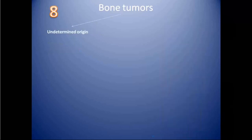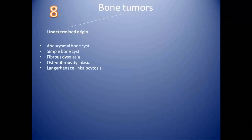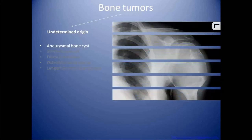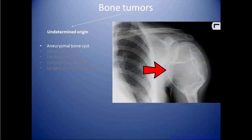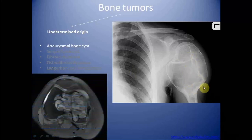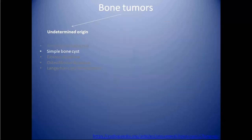The next category includes tumors of undetermined origin, which includes aneurysmal bone cyst, simple bone cyst, fibrous dysplasia, osteofibrous dysplasia, and Langerhans cell histiocytosis. Aneurysmal bone cyst is a benign expansile tumor seen in the metaphysis of long bones in adolescents. It can also be seen in flat bones and the spine. On radiographs it has a soap-bubble appearance due to blood-filled spaces separated by thin bony septa. On MRI it can show fluid-fluid levels. Differential diagnosis includes giant cell tumor, fibrous dysplasia, and telangiectatic osteosarcoma.